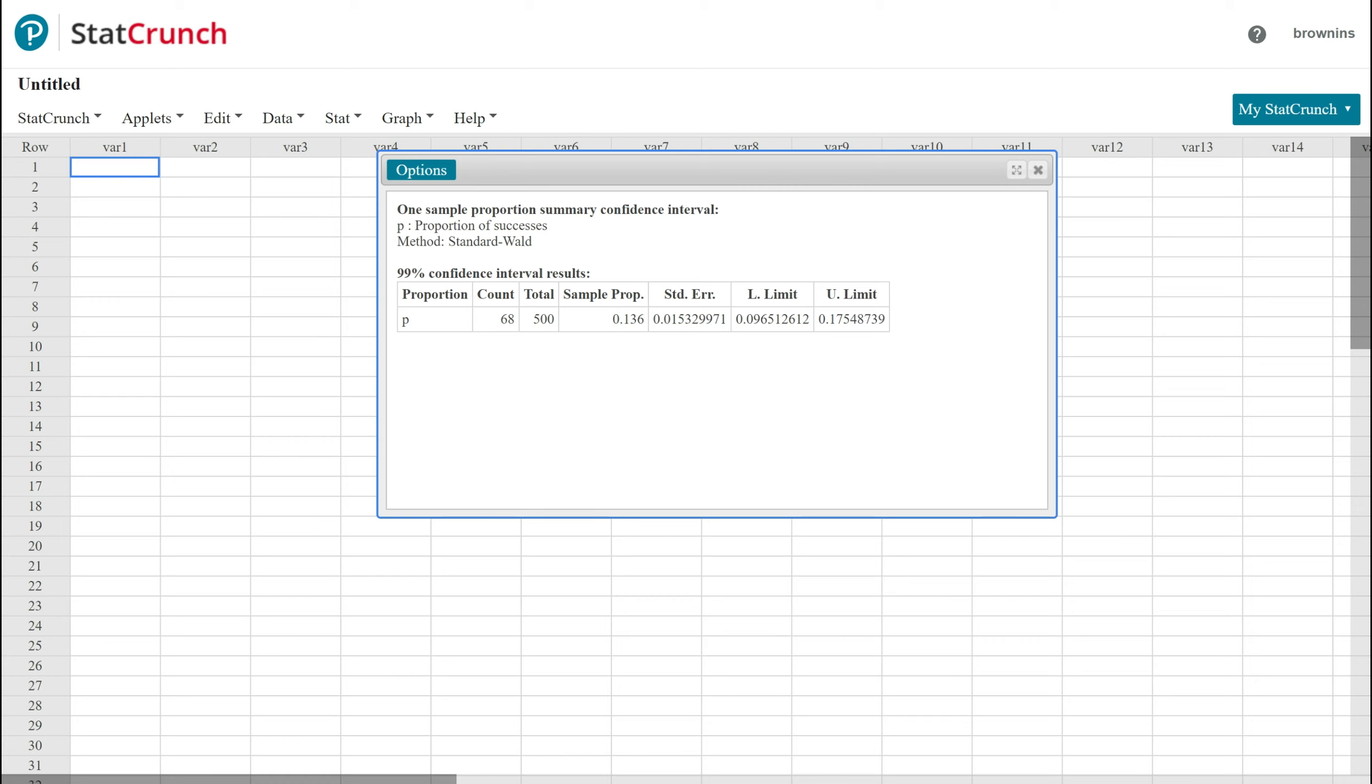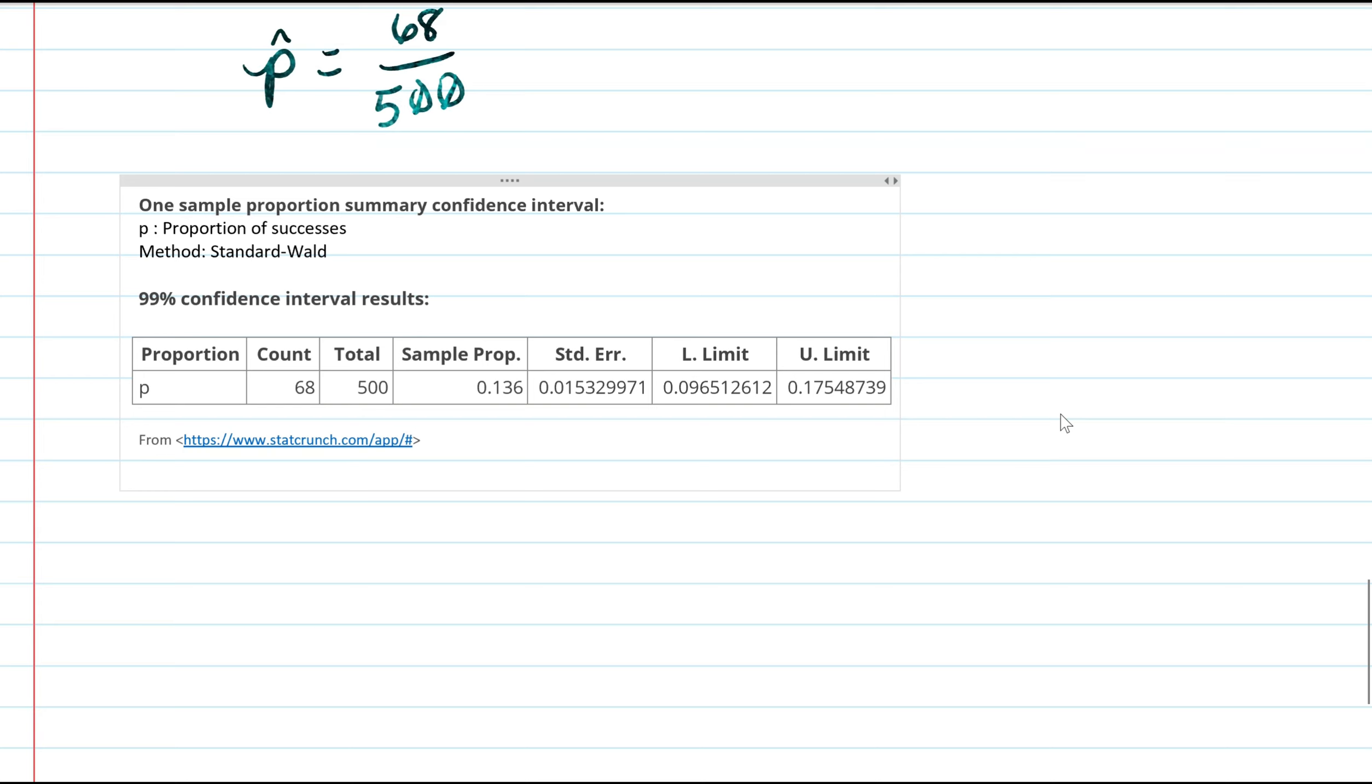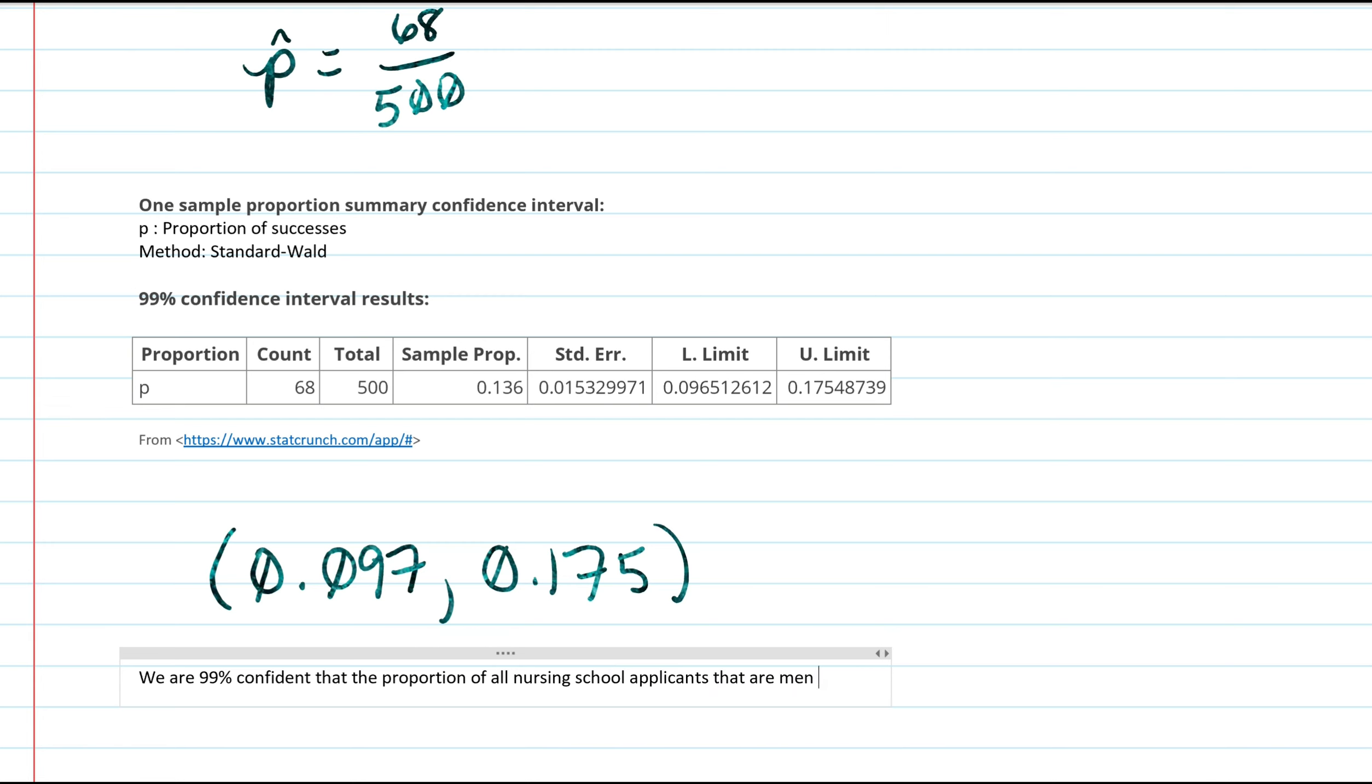So here we have the lower limit 0.0965 and 0.1754. So I'll just copy and paste the StatCrunch output right here so our confidence interval will be 0.097 to 0.175. Okay so then after that I'll just write a quick statement. The statement will say that we are 99% confident that the proportion of all nursing school applicants that are men is between 0.097 and 0.175.